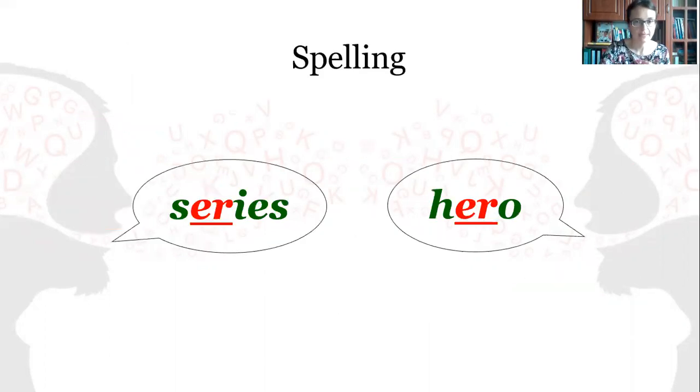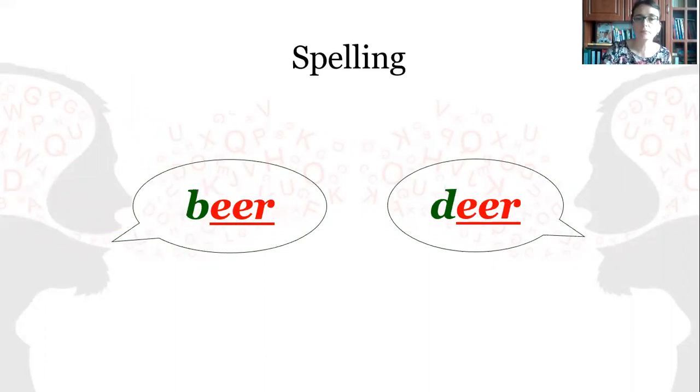How is this diphthong spelled? It can be spelled with the help of E-R as in series, hero, with the help of double E plus R as in beer, deer, with the help of E-A-R as in fear, dear.